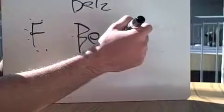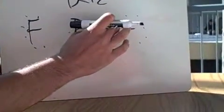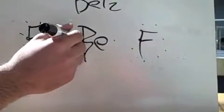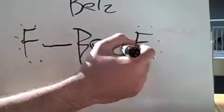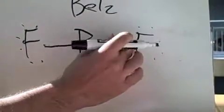We know that Be is an exception to the octet rule, so it only wants four valence electrons instead of the normal eight. Since fluorine is trying to get to the octet rule, we create a covalent bond with these two sharing, and these two sharing here.